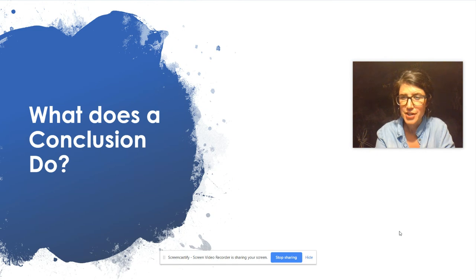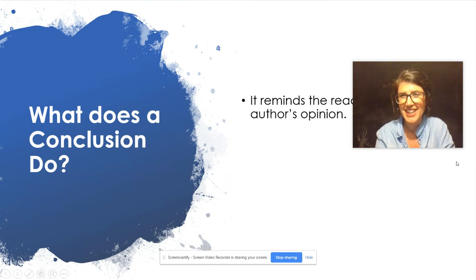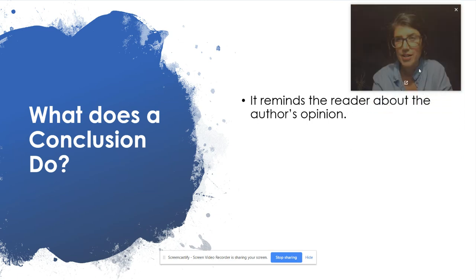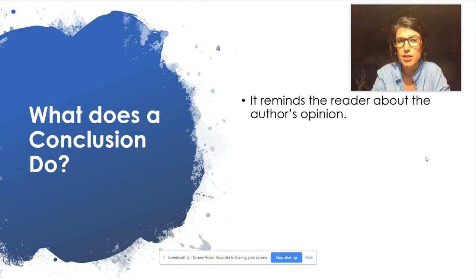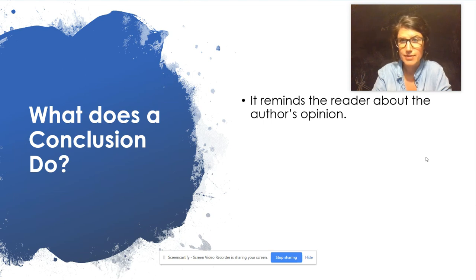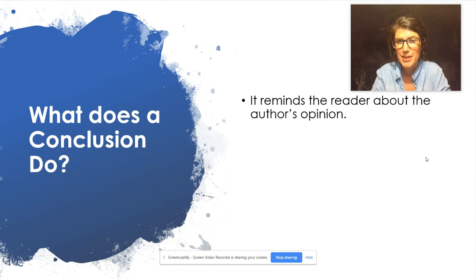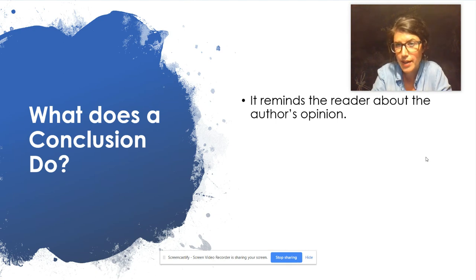So what does a conclusion do? Just like with an introduction, there are usually three big parts of a conclusion. First, a conclusion reminds the reader about the author's opinion — kind of just hits the reader over the head with it. You can't ever give the reader too much of your opinion. So at the very end of the essay, in your conclusion, you want to tell the reader one more time what your opinion is, just in case they forgot.